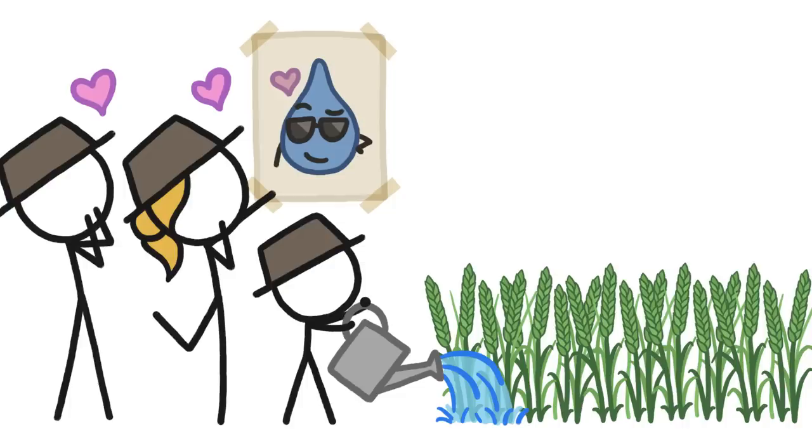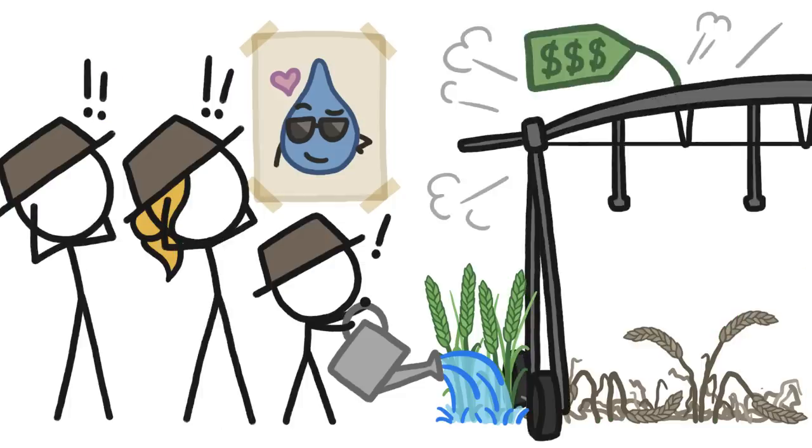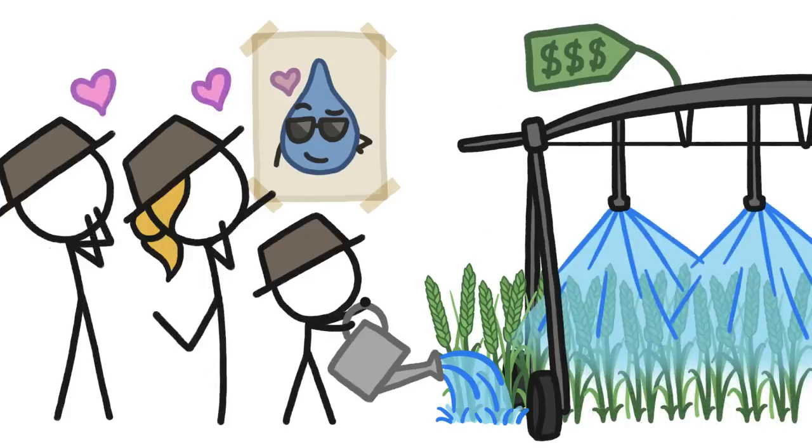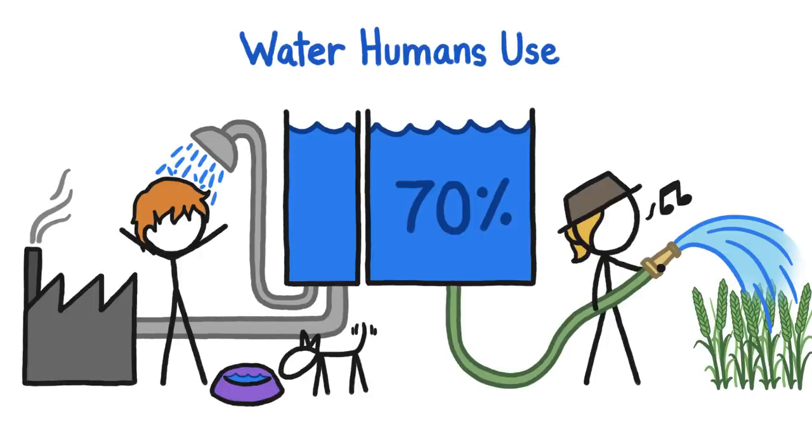Their livelihoods depend on crops that will die without enough water. So lots of farmers buy expensive equipment to pump tons of water to their fields. In fact, of all the water humans use, 70% is for agriculture.